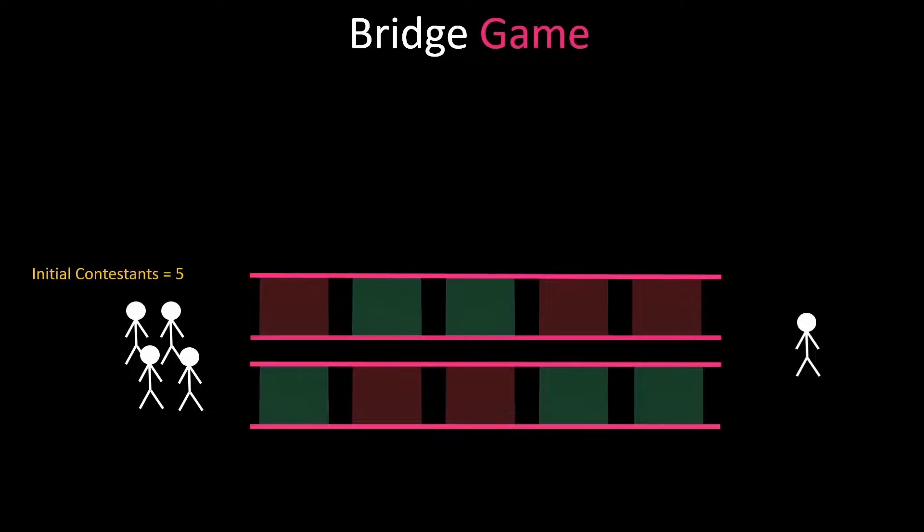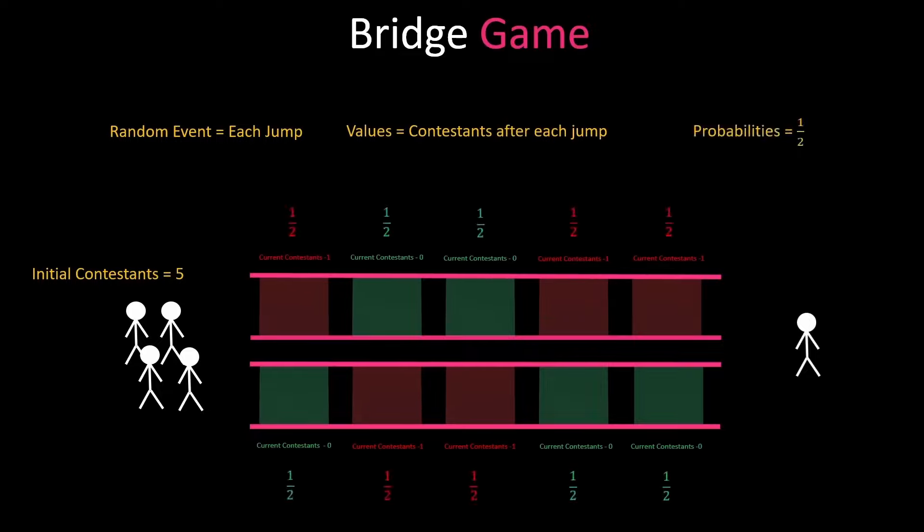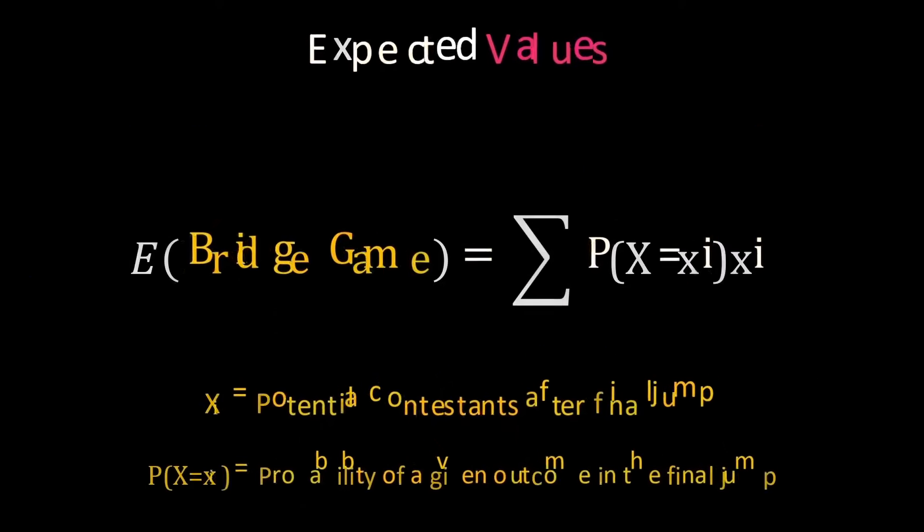To summarize this into something we can use mathematically we can say we have a sequence of random events where we know the outcomes of those events and the probabilities of those outcomes. If you've studied some statistics you would know this sounds like an expected value problem.